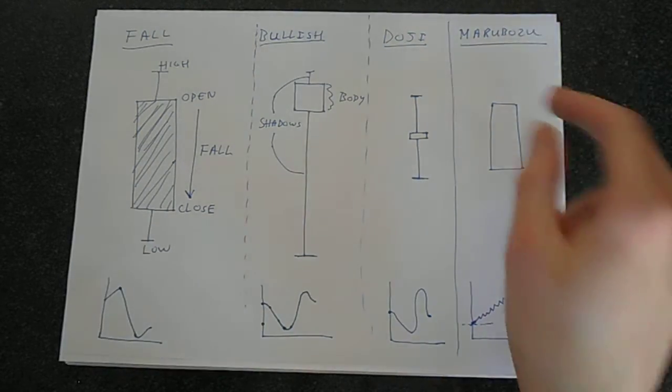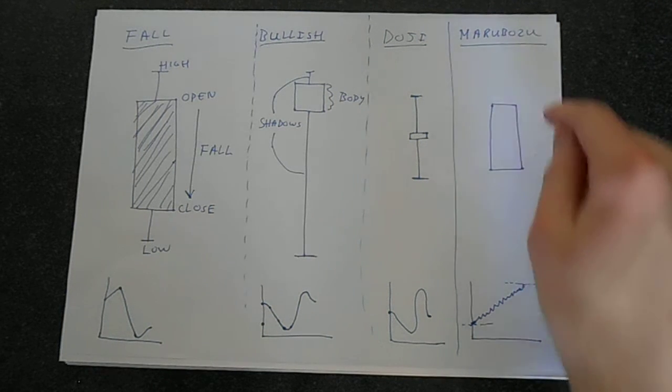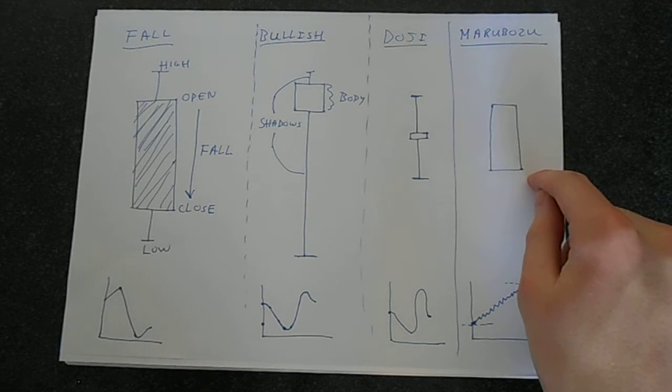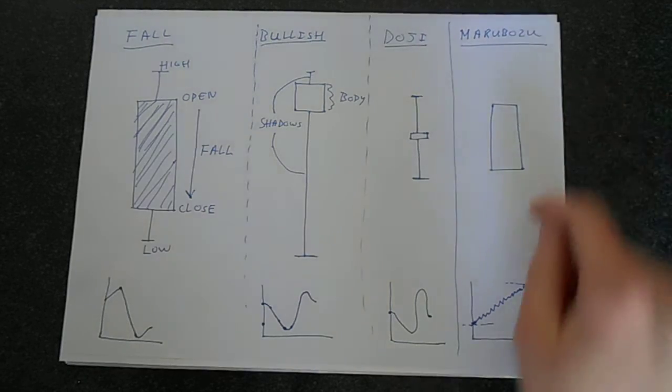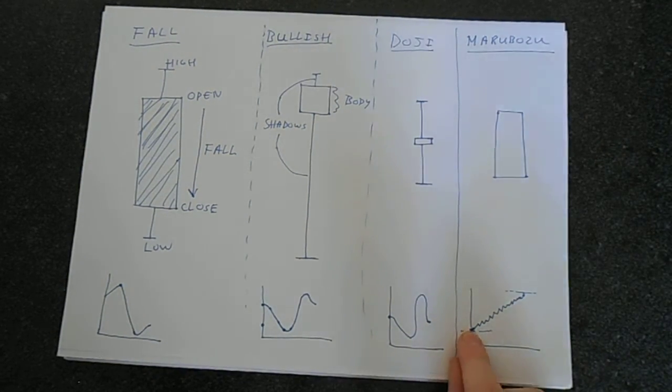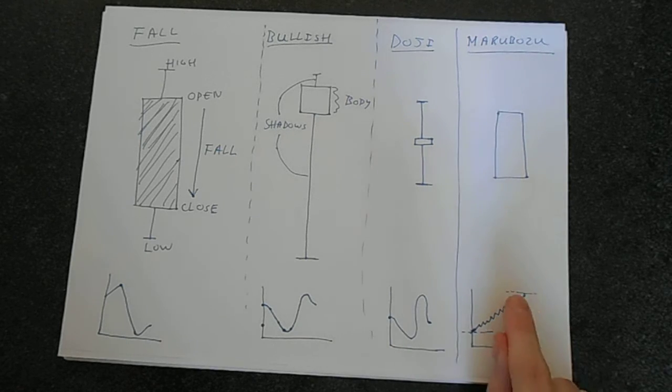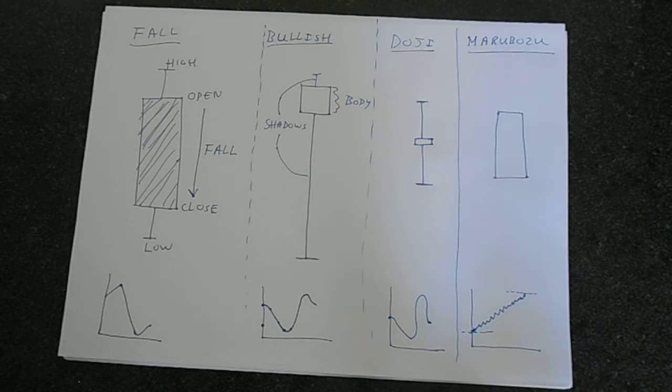If it was going down, then we shade it in, because you would have the open up here and the close here, whereas in this case, you've got the open here and the close here, hence it's going up. Now, notice, at no point does this graph ever fall below this line on the open and never, ever goes above the close price, hence there is no shadow needs drawn.